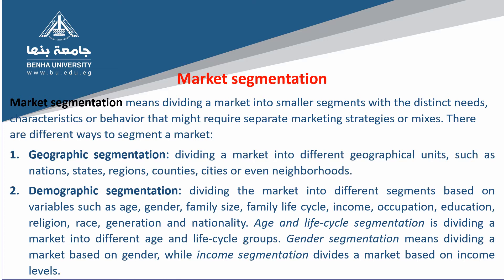Second, demographic segmentation, which means dividing the market into different segments based on variables such as age, gender, family size, family life cycle, income, occupation, education, religion, race, generation, and nationality. For example, age and life cycle segmentation divides a market into different age and life cycle groups. Gender segmentation divides a market based on gender, while income segmentation divides a market based on income levels.